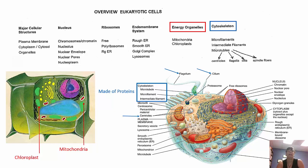On the left-hand side you have an animal cell; on the right-hand side a plant cell. Notice the plant cell has chloroplasts, while the animal cell does not.